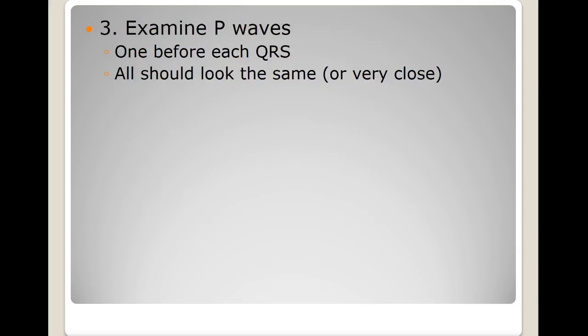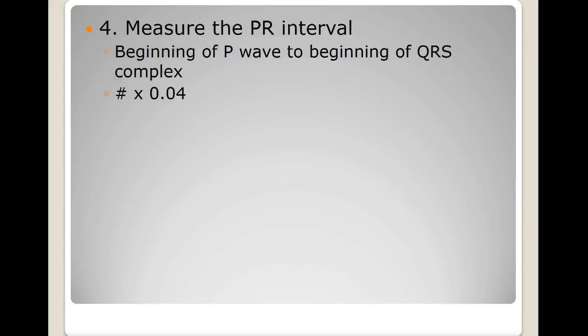Step three is to examine the P waves. There should be one P wave before each QRS complex, all should look the same, and each P wave should be within the established parameter of less than 0.12 seconds. The P wave represents atrial depolarization or atrial contraction.